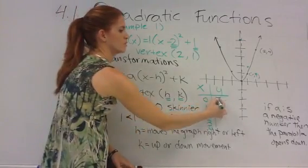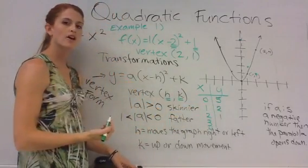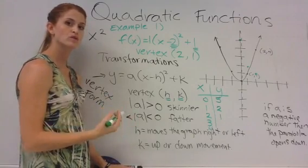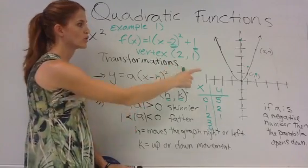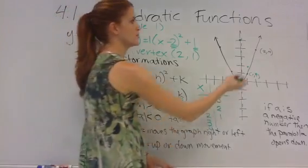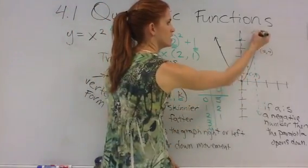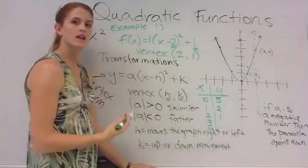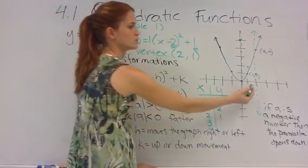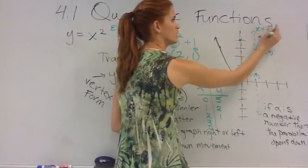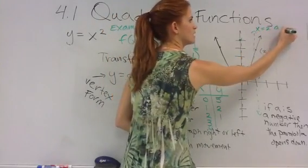Now remember, we did talk about our axis of symmetry. The axis of symmetry always goes through the vertex point. So for this graph here, my axis of symmetry is going to be right there. That line, since it goes through x equaling 2, is going to be the line x equaling 2. This is my axis of symmetry.